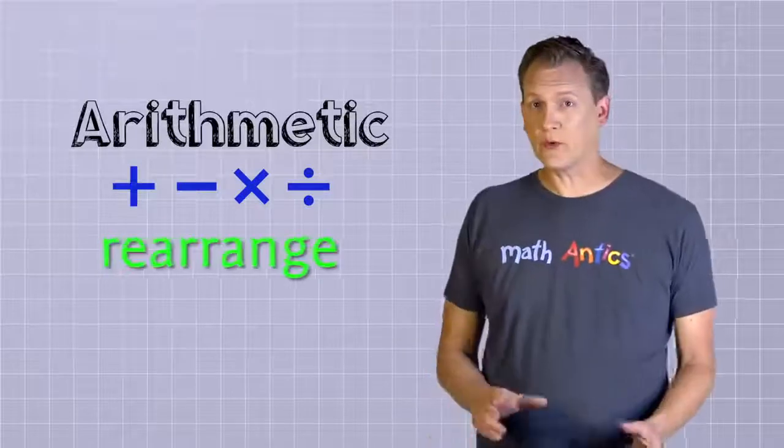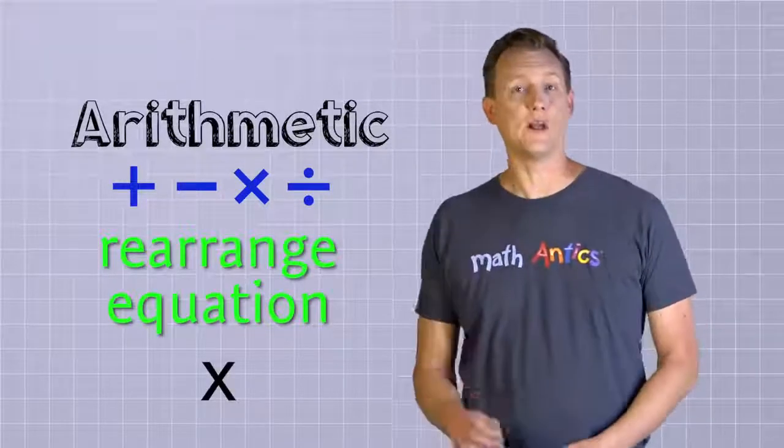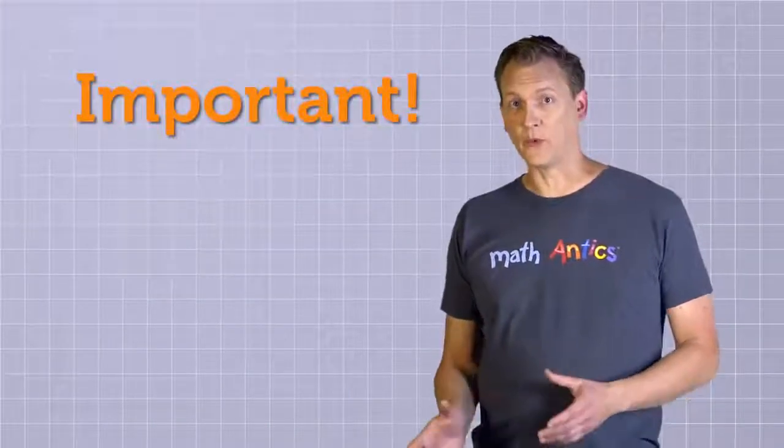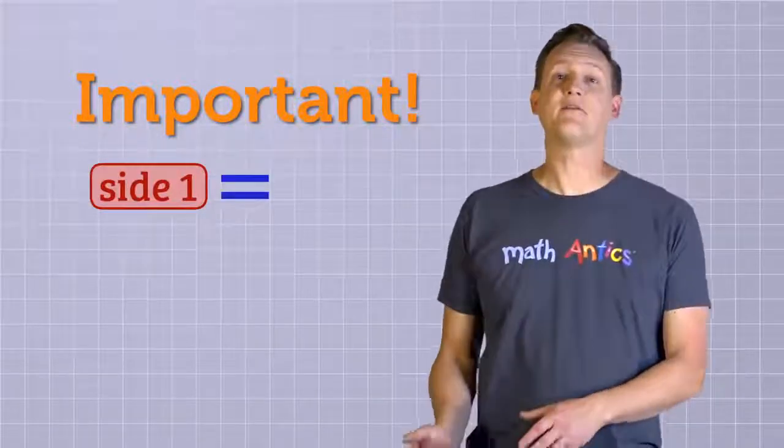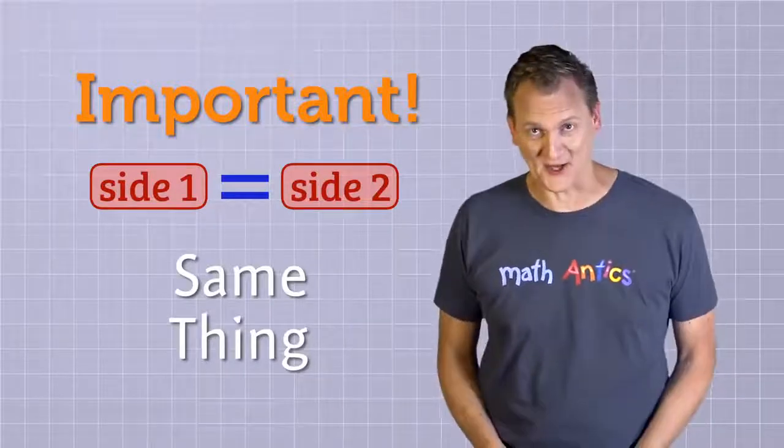Now before we see some examples, do you remember the key strategy for solving an equation with an unknown value in it? We have to use arithmetic to rearrange the equation so that the unknown is all by itself on one side of the equal sign. And the most important thing to keep in mind while rearranging equations is that whenever we do something to one side of an equation, we have to do the same thing to the other side, or else the other side might get jealous.